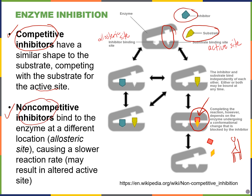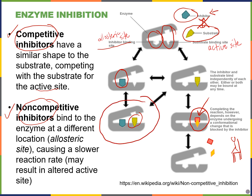The other type of inhibitor is non-competitive inhibitors. These do not look like the substrate, so they don't bind to the active site — they bind at a different site, usually called the allosteric site. What they do is prevent the reaction from happening either by changing the shape of the active site so the substrate can no longer bind, or by changing the shape of the enzyme so it can no longer close properly. This changes the shape of the enzyme so it can no longer go through the usual reaction, resulting in no reaction happening.